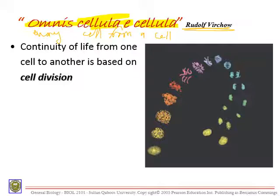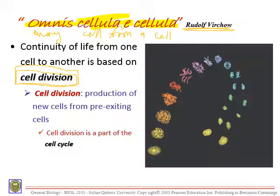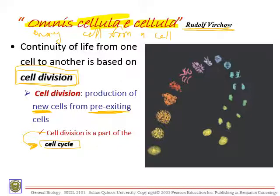Continuity of life from one cell to another is based on a process called cell division. Cell division is the production of new cells from pre-existing cells. New cells come from cells that already exist — pre-existing cells. This process of cell division is part of a larger process, which we call the cell cycle.